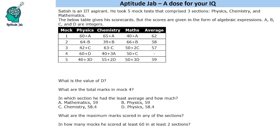Hello everyone, welcome to Aptitude Jab. This set says that Satish is an IIT aspirant. He took 5 mock tests that comprised 3 sections: Physics, Chemistry and Mathematics. The below table gives his scorecards, but the scores are given in the form of algebraic expressions where A, B, C, D are integers. Now we have to answer these questions based on it.